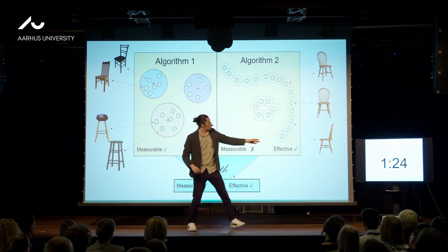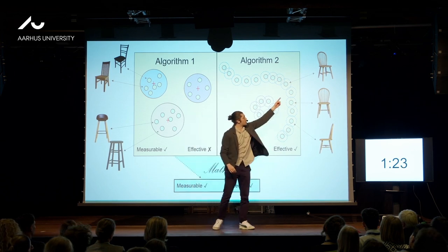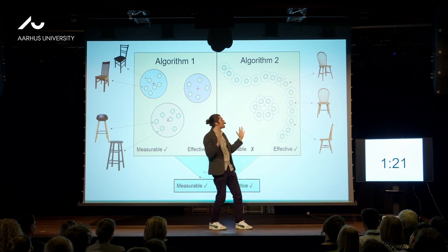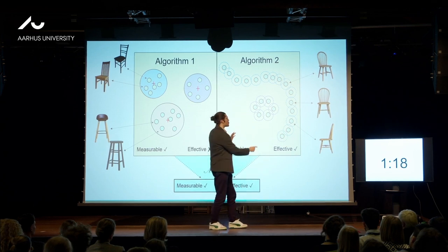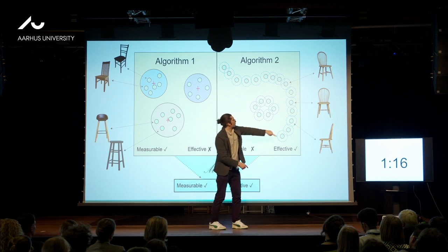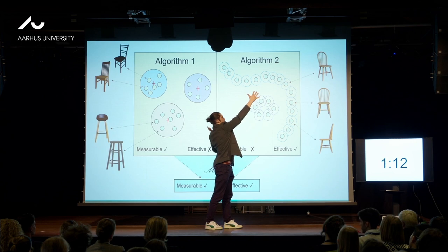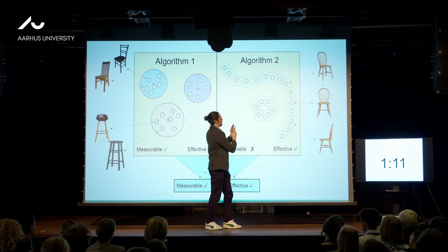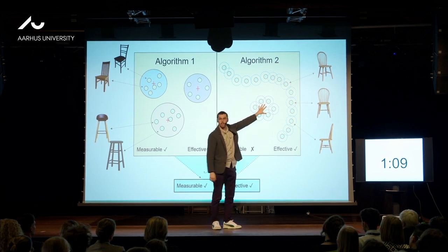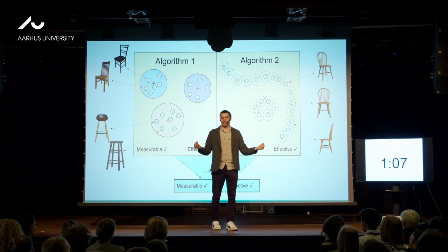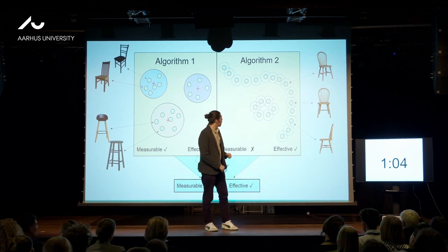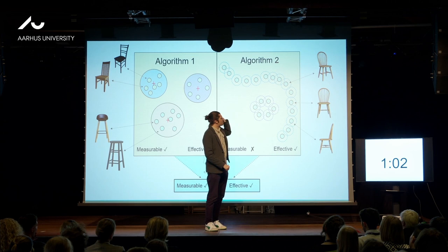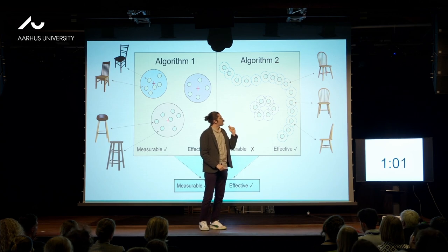We know that these are all the same chair, but real data is messy — it's not going to be in nice clusters. So if I tried to get algorithm one to identify all of these as the same, I would draw a big circle across this, and it would also capture these points in the middle, which might be a totally different thing — tables. So algorithm one is measurable, but it's not very effective.